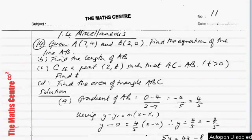In part B, we have to find the length of AB. In part C, you are given a point C(2,T) such that AC equals AB and you are asked to find the value of T. And finally, in part D, you are asked to find the area of triangle ABC.